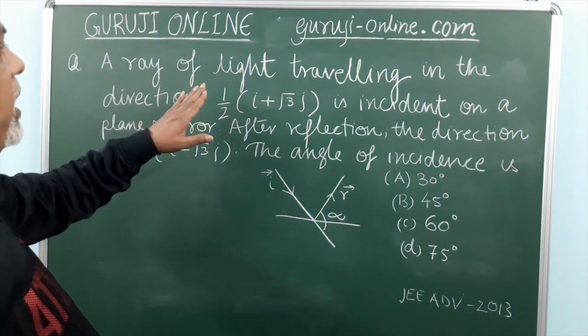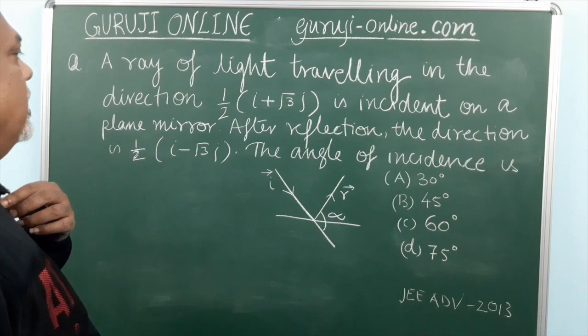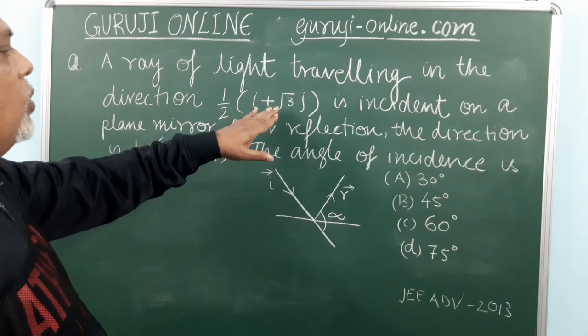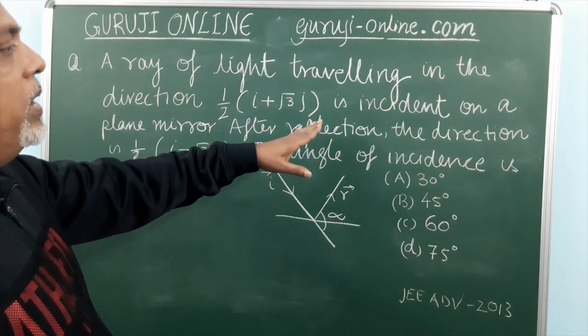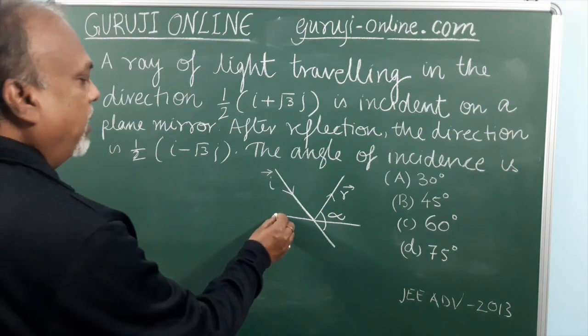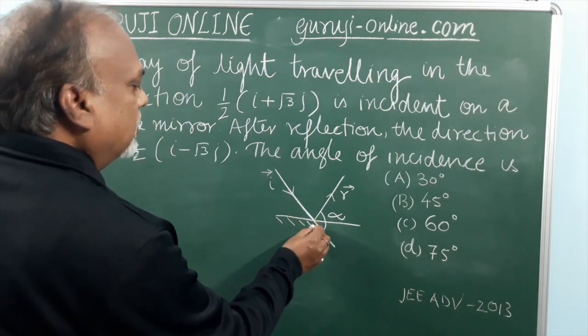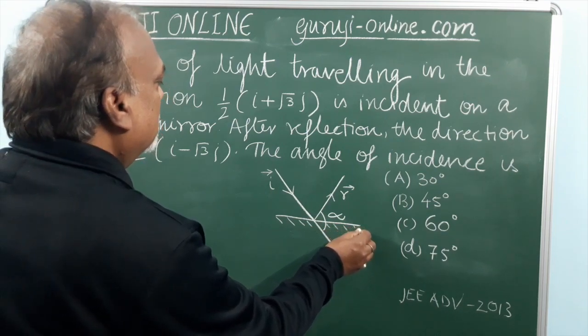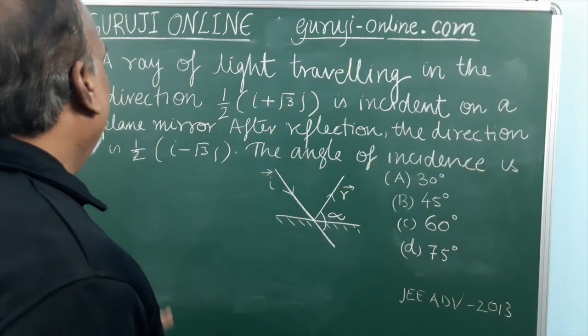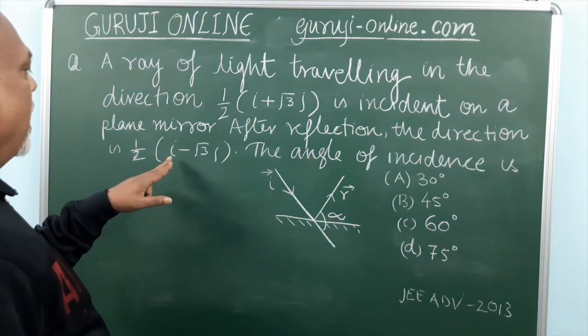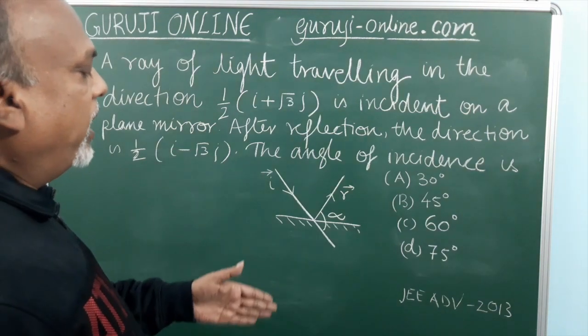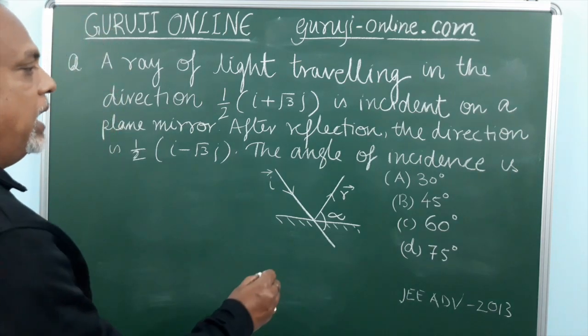This question is like this: A ray of light travelling in the direction 1 by 2 i plus root 3 j is incident on a plane mirror. This is the plane mirror. After reflection, then it is reflected in the direction 1 by 2 i minus root 3 j. So we have to find out the angle of incidence. That is this angle.